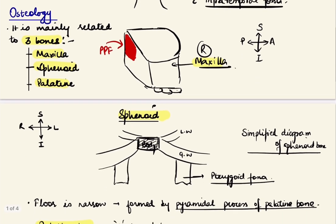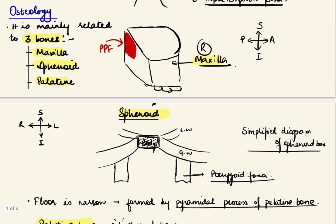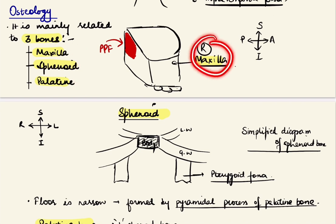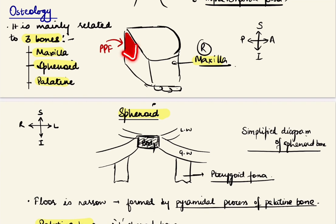Coming to the osteology, it is mainly related to three bones: maxilla, sphenoid, and the palatine bone. This being the right maxilla, the pterygopalatine fossa is related to the back of the maxilla, that is the posterior part of the maxilla in the superior and medial part.